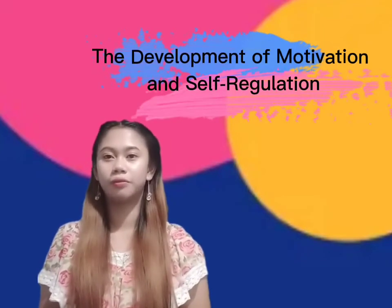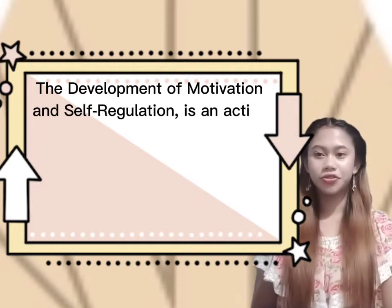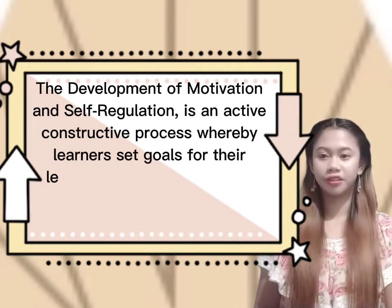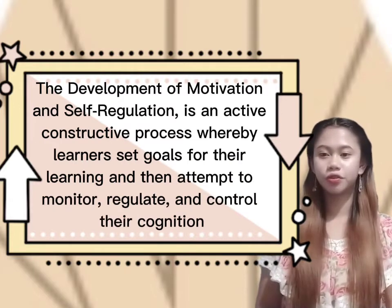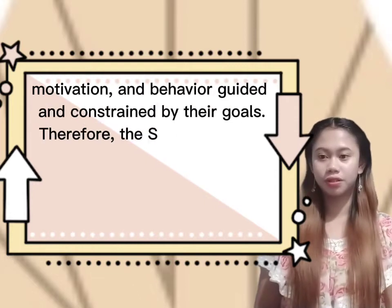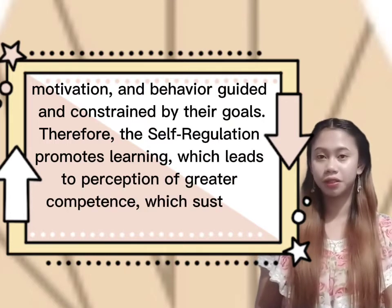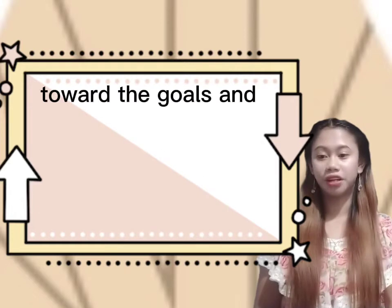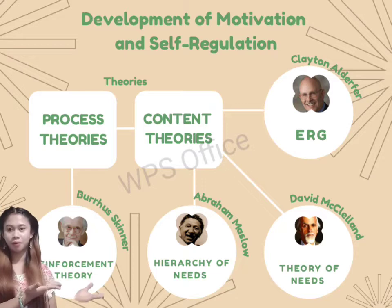The development of motivation and self-regulation is an active, constructive process whereby learners set goals for their learning and then attempt to monitor, regulate, and control their cognition, motivation, and behavior guided and constrained by their goals. Therefore, self-regulation promotes learning which leads to perception of greater competence, which sustains motivation toward the goal and future goals. Here is our concept map about the development of motivation and self-regulation.